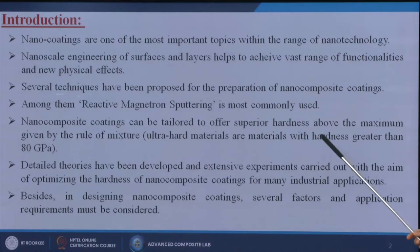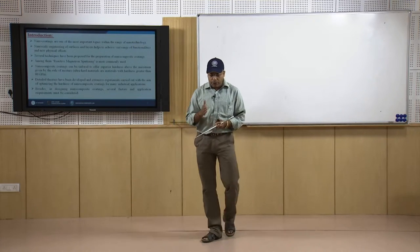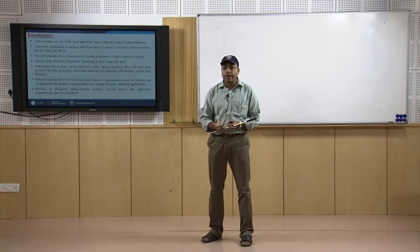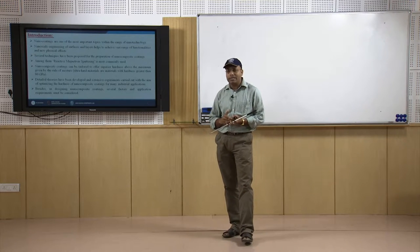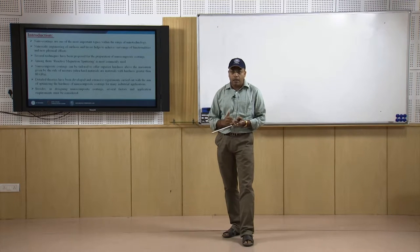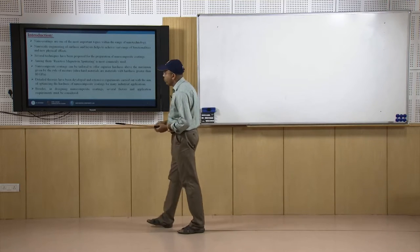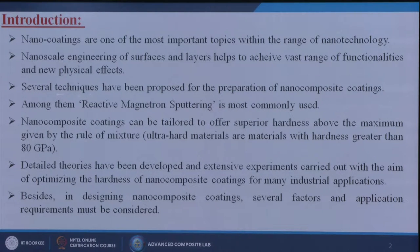We are not only changing the appearance of materials — we are changing physical properties such as tensile strength, elongation at break, hardness, optical properties, electrical properties, and morphology. There are many properties we can change through nano composite coatings. Detailed theories have been developed and extensive experiments carried out with the aim of optimizing the hardness of nano composite coatings for many industrial applications, including cutting tools, indentation, and scratch testing.